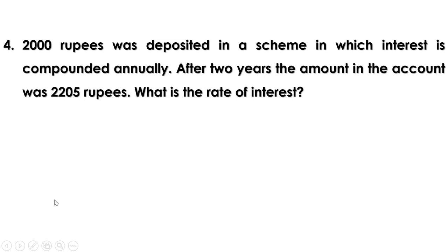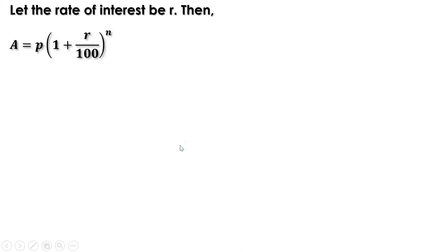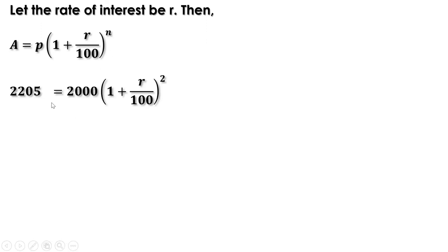Fourth problem: 2000 rupees was deposited in a scheme where interest is compounded annually. After two years the amount was 2205 rupees. What is the rate of interest? Using the formula A = P(1 + r/100)^n, with A = 2205, P = 2000, n = 2, we get 2205 = 2000 × (1 + r/100)².